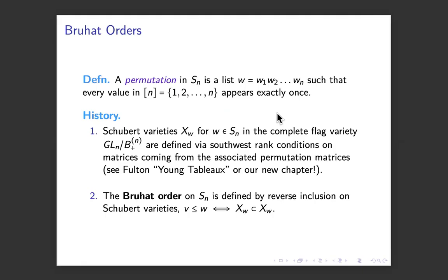The Bruhat order is a natural partial order on permutations defined by V is less than or equal to W if the corresponding Schubert variety X_W is contained in X_V. There's a typo - I want them to be reversed, so V is less than W if X_W is contained in X_V.